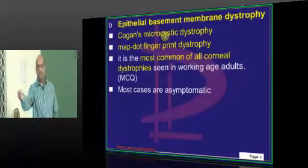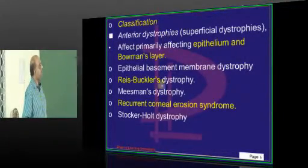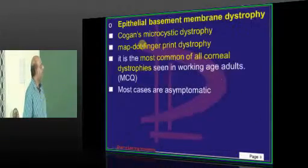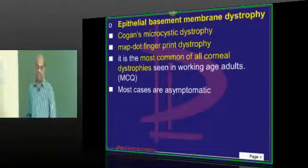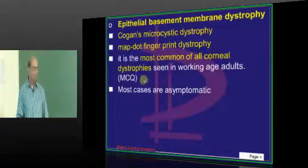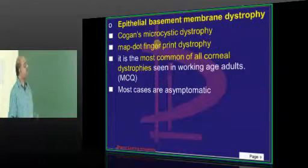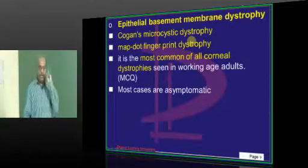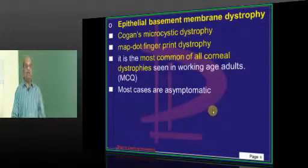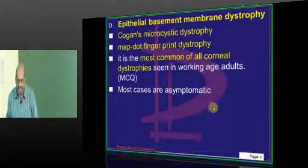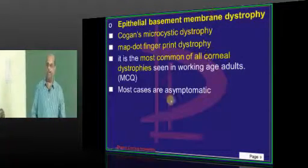What is epithelial basement membrane dystrophy? It is an anterior dystrophy. It is also called Cogan's microcystic dystrophy. Another name to remember is map dot fingerprint dystrophy, which is how it looks. One key reason to remember it: if asked what is the most common of all corneal dystrophies in working-age adults, the answer is Cogan's microcystic dystrophy, also called epithelial basement membrane dystrophy.